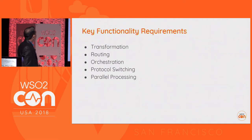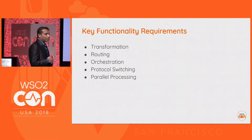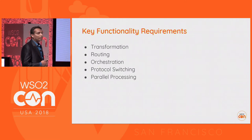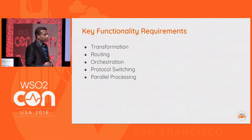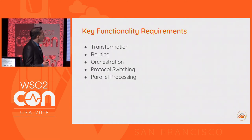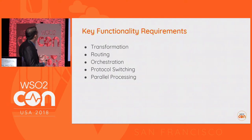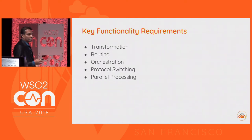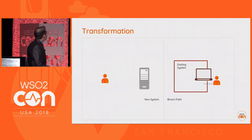Now let's look at the key functional requirements to have in an integration solution to do brownfield integration. I have listed five such functional requirements: transformation, routing, orchestration, protocol switching, and parallel processing. Let's look at each of them in the coming slides.